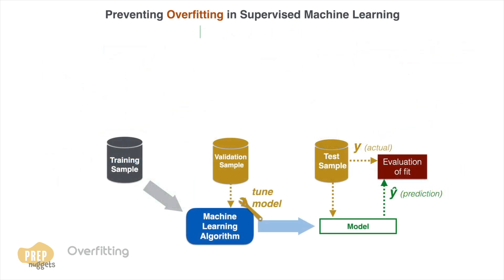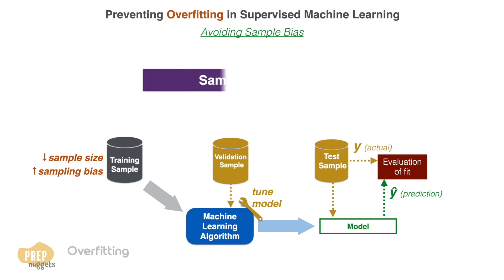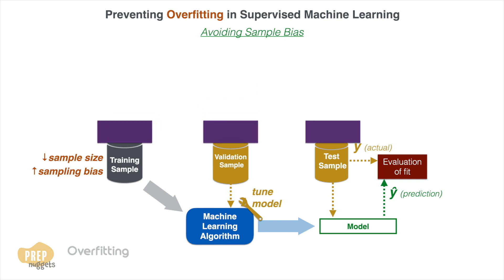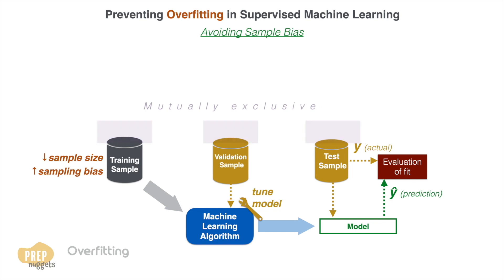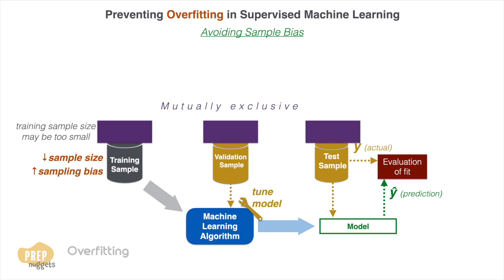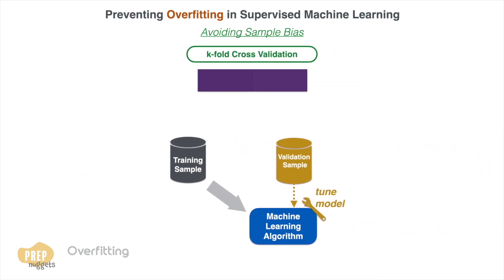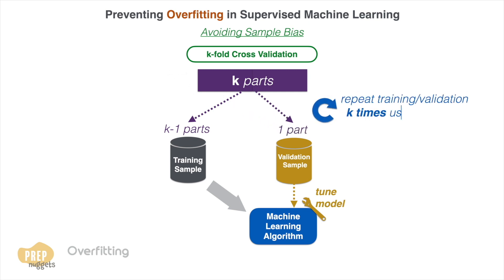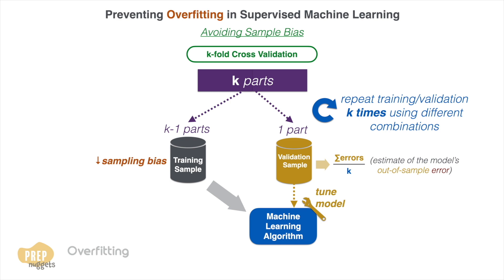The second strategy comes from the principle of avoiding sampling bias. When the sample size is too small, sampling bias increases. This is a problem as the already limited sample size has to be divided into training, validation, and test samples. To mitigate this, a technique called cross-validation can be used. In k-fold cross-validation, the sample is randomly divided equally into k parts. Training is done on k-1 parts with one part left for validation, and this process is repeated k times using different combinations of parts. This ensures each data point is used in the training set k-1 times, and the average of the k validation errors is taken as a reasonable estimate of the model's out-of-sample error.